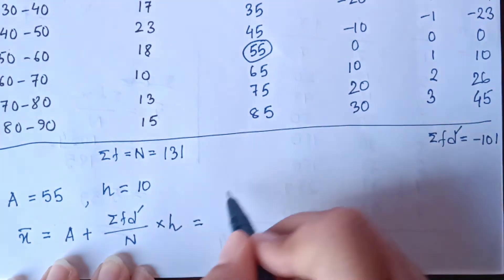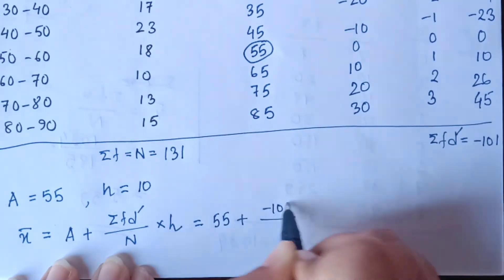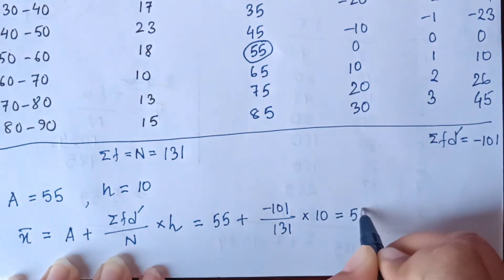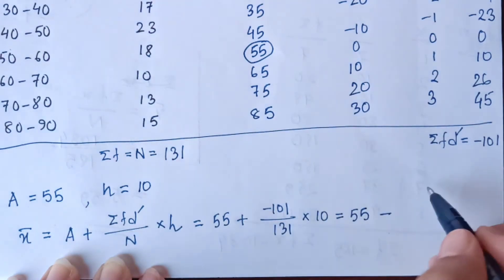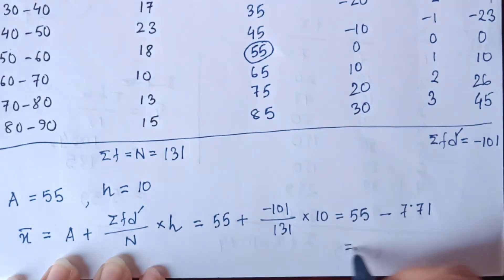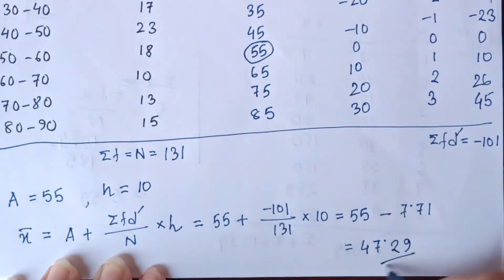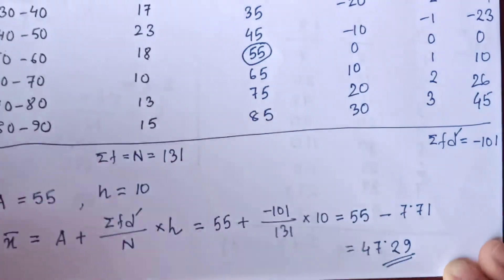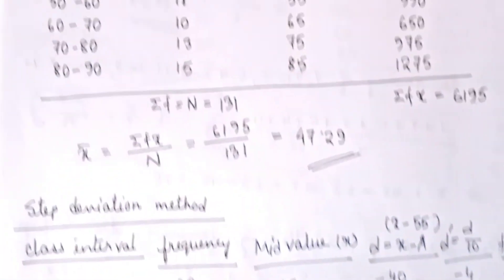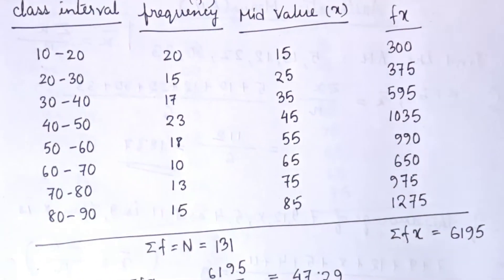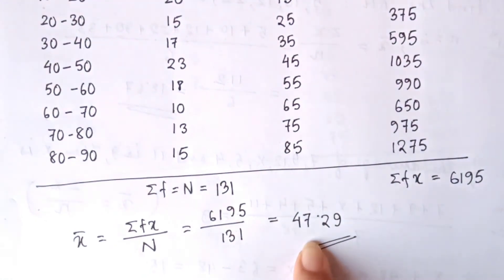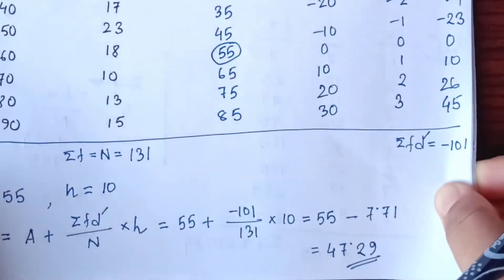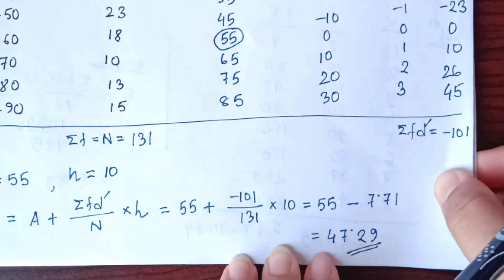Substituting all values: 55 plus (minus 101 divided by 131) into 10. This value equals minus 7.71, giving 55 minus 7.71 equals 47.29. We already discussed this same question in the previous video using the formula summation of F X divided by N, and we got the answer 47.29. By using the step deviation method, we are also getting the same value, 47.29.